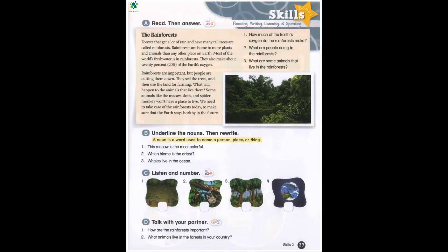Page 39 C. Listen and number. One: Rainforests are important, but people are cutting them down. Two: Forests that get a lot of rain and have many tall trees are called rainforests. Three: We need to take care of the rainforests today to make sure that the Earth stays healthy in the future. Four: Rainforests are home to more plants and animals than any other place on Earth.